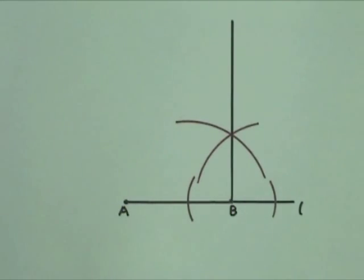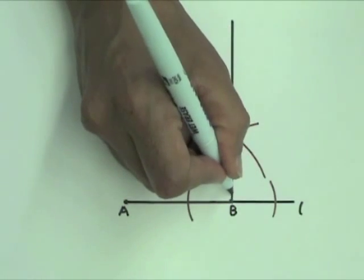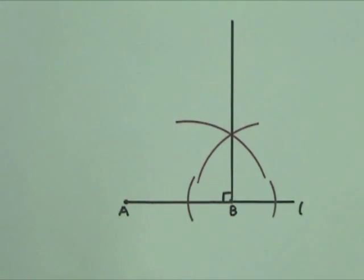This line is perpendicular to AB, so angle B is a right angle. Construct the second side BC of the square. BC must have the same length as AB.